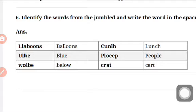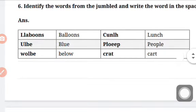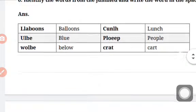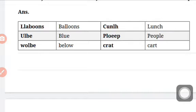In the book you will have to look at this box for the first alphabet. What is the word? L-A-B-O-O-N-S. So what is this word? Balloons. B-A-L-L-O-O-N-S. Same, it is U-L-B-E. So, blue. B-L-U-E. Blue. Then W-O-L-B-E. So its word is below. B-E-L-O-W.